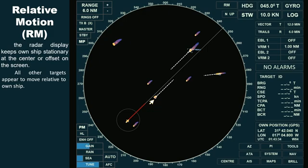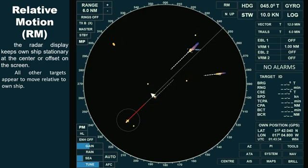This is why the trail doesn't extend as it does for other moving targets with different courses or speeds. This concept can be a bit confusing for beginners, but with practice, it will become more familiar. Now, let's switch back to our original setting, with the trail set to true. In this mode, the trails of stationary objects disappear, while the vessel ahead will now display its trail, reflecting its true movement over time.